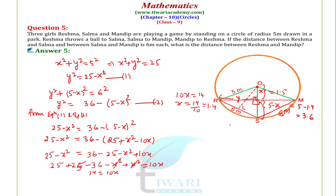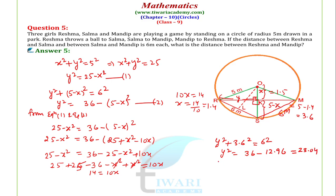अब right-angle triangle RKS के लिए देखें। Y² + (3.6)² = 6², so Y² = 36 − 12.96 = 23.04. Therefore Y = √23.04 = 4.8 metres.